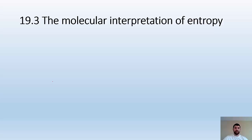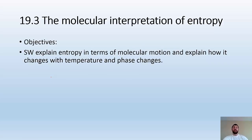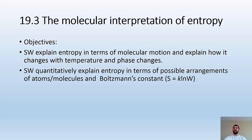How's it going ladies and gentlemen, Mr. John here again taking a look at 19.3 stuff, the molecular interpretation of entropy. Our objectives of this lesson is to explain entropy in terms of molecular motion and explain how it changes with temperature and phase changes. We also want to be able to quantitatively explain entropy in terms of possible arrangements of atoms or molecules and the Boltzmann constant. So we're going to be taking a look at this equation right towards the end of the video.